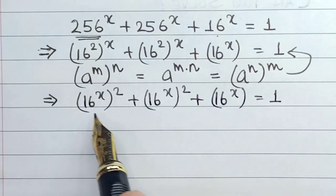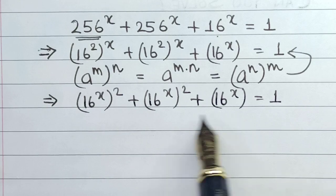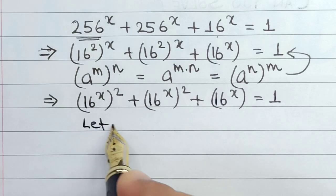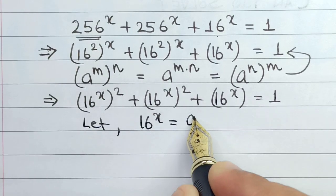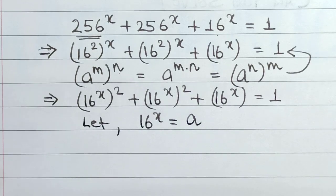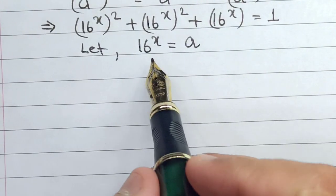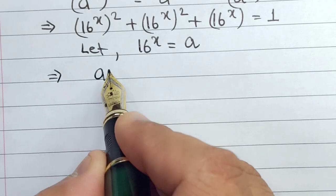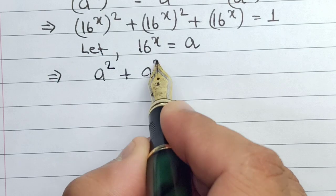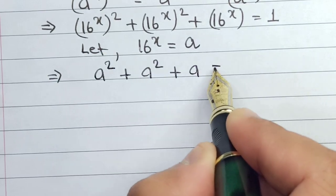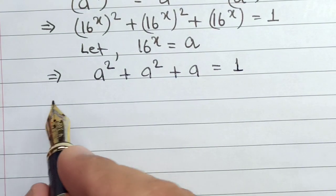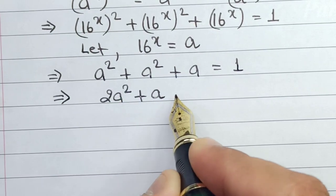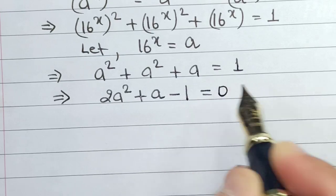As you can see, 16 to the power x is common in both these components. So I will let 16 to the power x equal a. The main advantage of this substitution is that the entire equation converts into: a squared plus a squared plus a is equals to 1. Further simplifying, we have 2a squared plus a minus 1 is equals to 0.